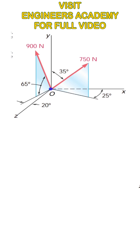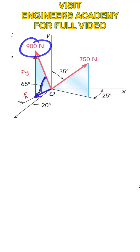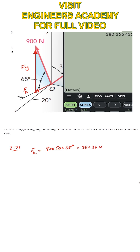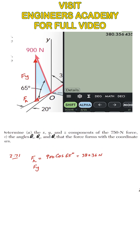We will have one component FH and one component FY. Since the angle is made with FH, FH will be the cosine component: FH = 900 cos(65°) = 380.36 Newtons. And FY = 900 sin(65°).